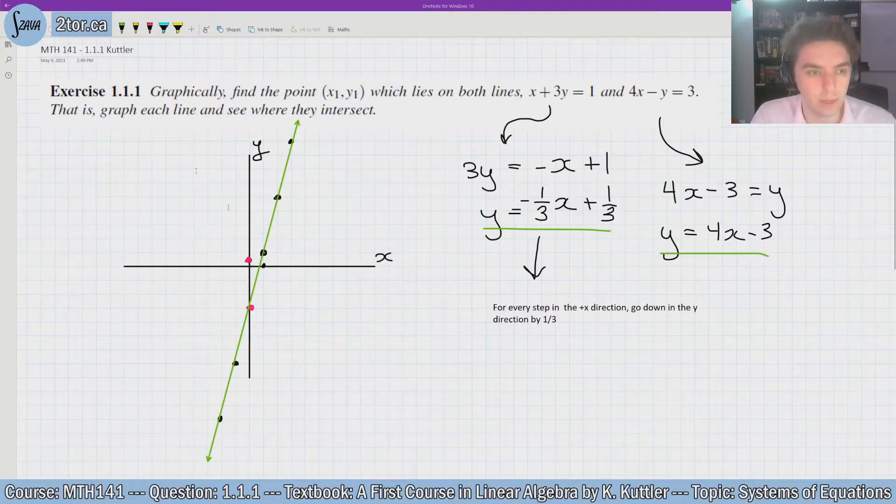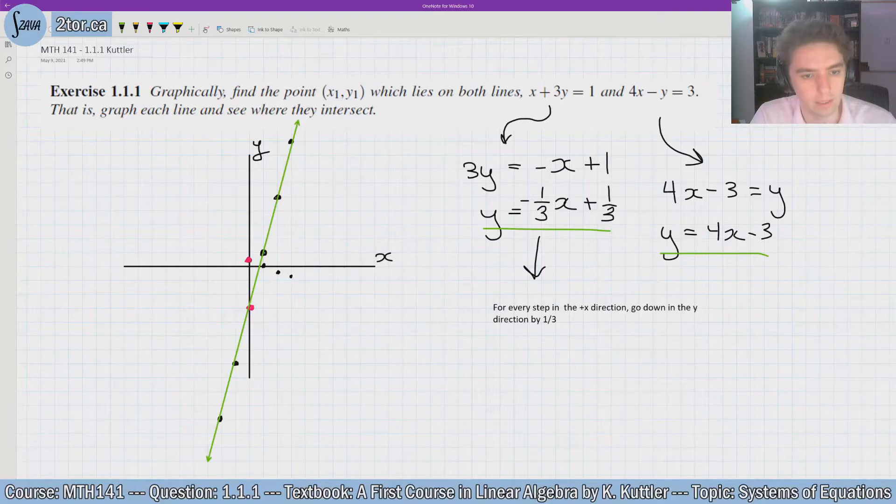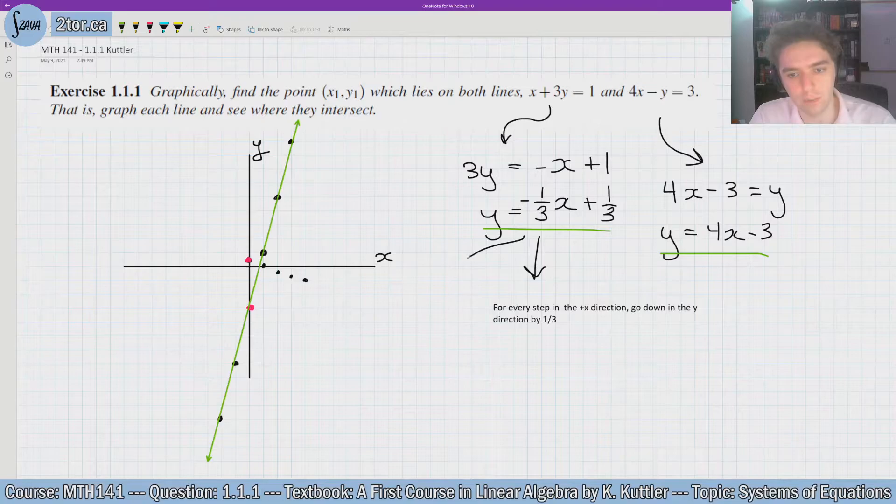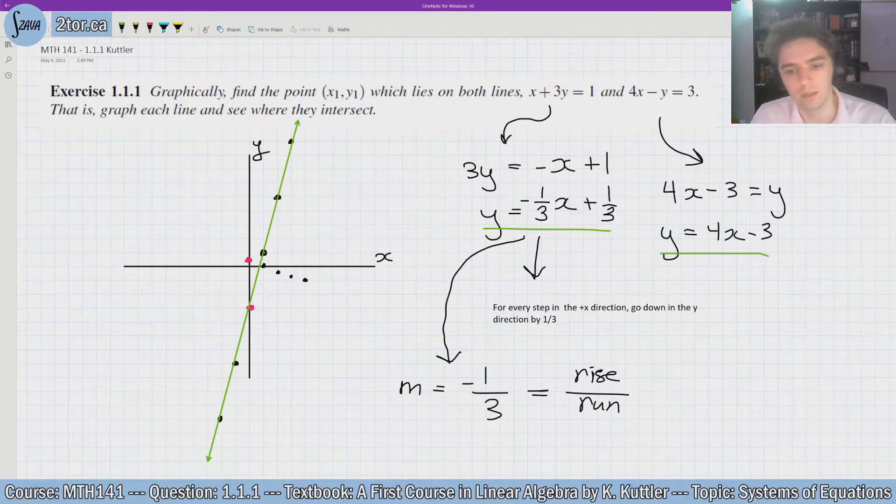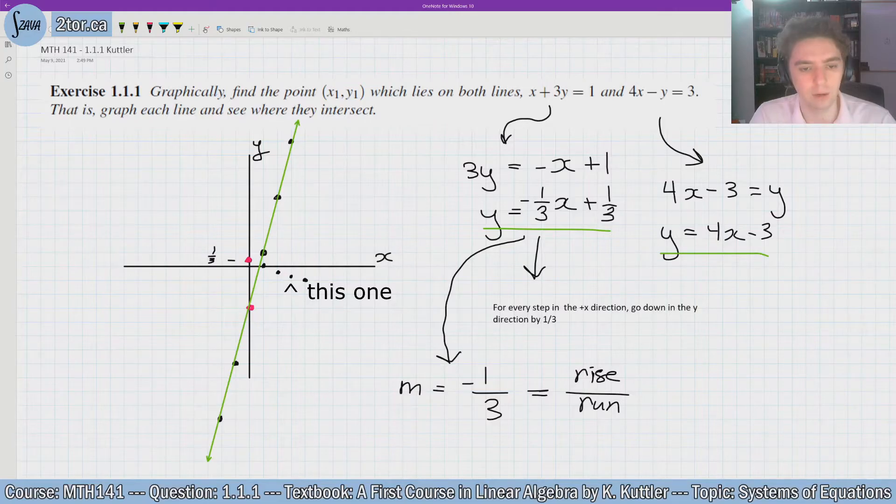So our next point would be one more step to the right and down by another third. So I'll put it right there, and then again it'd be maybe right there would be the next point. So you see as every step I make in the positive x direction I go down by a third. You can also think of this slope a different way, which is that slope m, our particular one is -1/3, you can think of it like that or 1 over -3. And this is rise over run. So as I go 3 to the right, I have to go down by a whole -1, and as you can see that is what I do. This y value here is 1/3, and this y value here is pretty much -1 + 1/3.